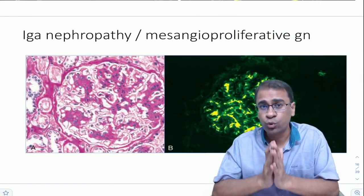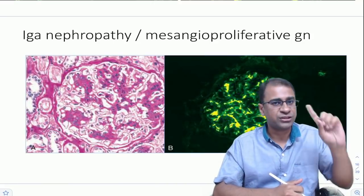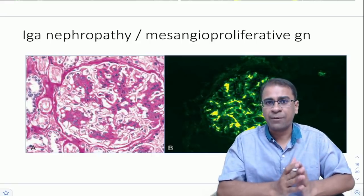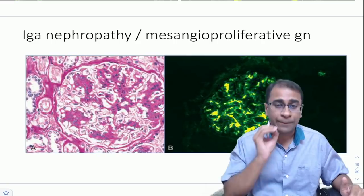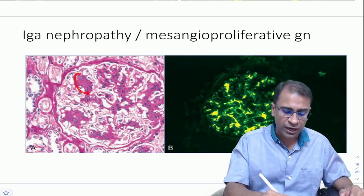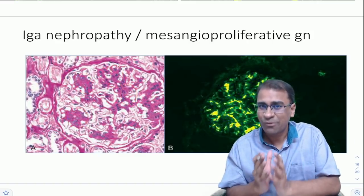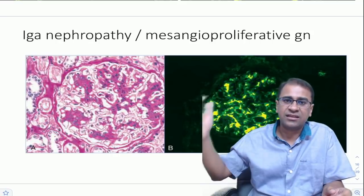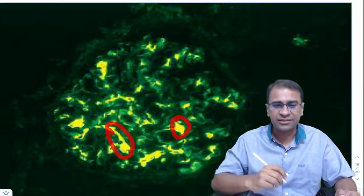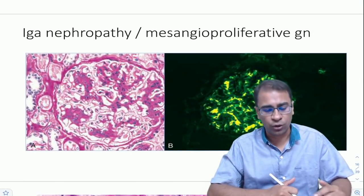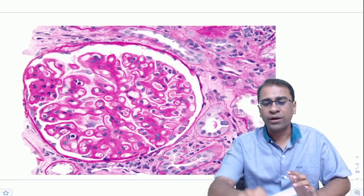The third is IgA nephropathy. Very important: a 7-to-21-day history points to PSGN, while a 1-to-2-day history after an episode of pharyngitis presenting with gross hematuria suggests IgA nephropathy. On kidney biopsy you find mesangial deposits of IgA — it can also be IgG or IgM along with C3. On fluorescence you see these Ig deposits, and this pattern is called mesangioproliferative glomerulonephritis.